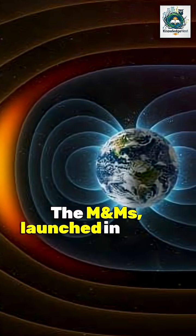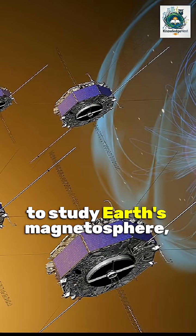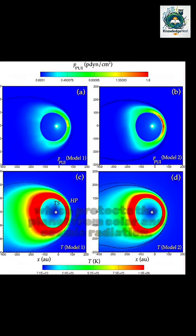The MMS mission, launched in 2015, consists of four spacecraft designed to study Earth's magnetosphere, which protects the planet from solar and cosmic radiation.